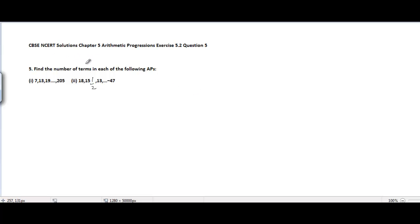CBSE NCERT Solutions Chapter 5 Arithmetic Progressions Exercise 5.2 Problem 5. The problem is: find the number of terms in each of the following APs. There are two parts in this problem and we will go through them one by one.